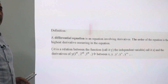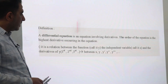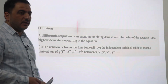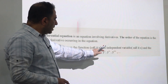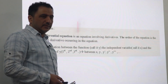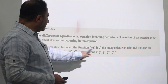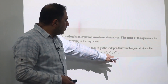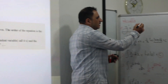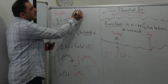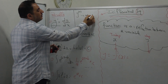What is the definition of a differential equation? A differential equation is an equation involving derivatives. The order of the equation is the highest derivative occurring in that equation. In other words, it is a relation between the function y, the independent variable x, and the derivatives of y — the first, second, third, etc. So it is a relation between x, y, y prime, y double prime, y triple prime. This y(n) represents the nth order derivative.